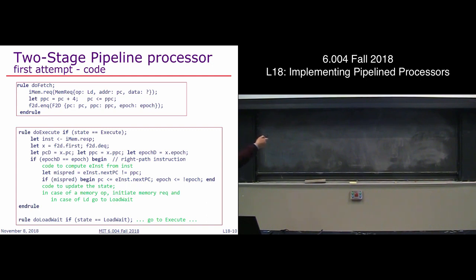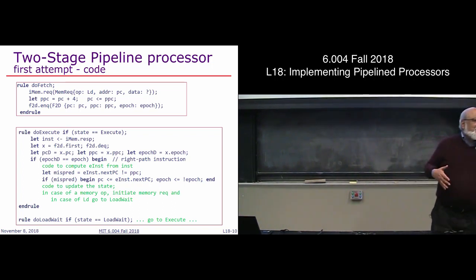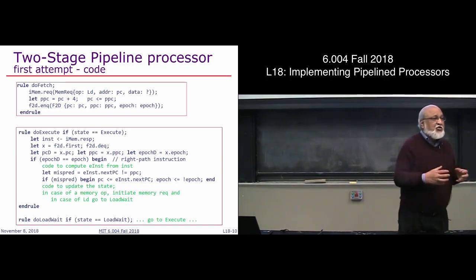If the instruction's epoch matches the current epoch, execute normally — this is code we've written many times: compute e-inst from inst. We can also compute the misprediction, which is just comparing the real next PC with PPC. If it's a misprediction, then PC gets the correct value and epoch gets the next epoch. Epoch is essentially a single bit that flips on misprediction.